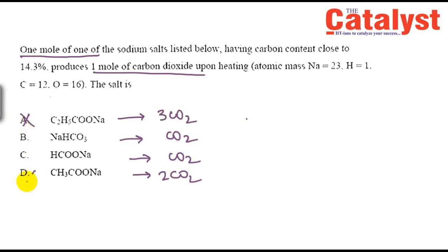So options A and B will be struck off first, because they give three moles, one mole, and two moles of CO2 respectively — those don't fit the criterion we need.